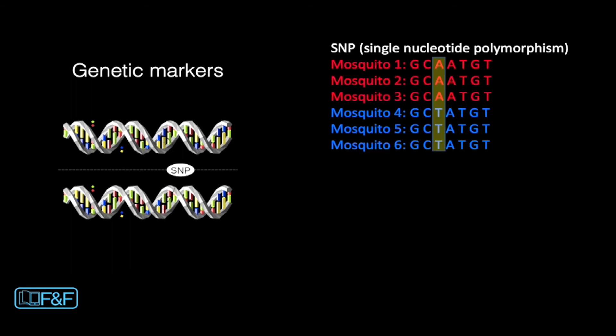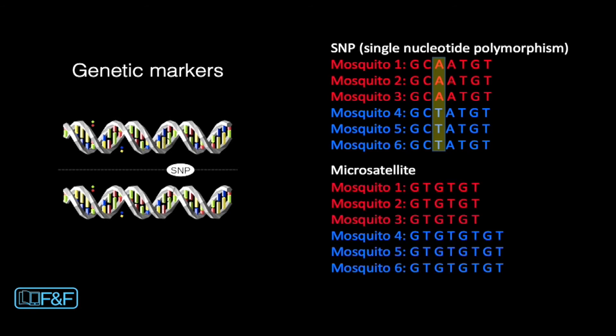Within a species, there are a lot of spots in the DNA that are the same across all individuals, but there are some spots that differ — and those are important for these analyses. One type of genetic marker is called a single nucleotide polymorphism, or SNP, and that's when individuals vary at one specific location in the genome. For example, the red population of mosquitoes generally has an A at that third position, whereas the blue population generally has a T. Another type of genetic marker we used is called a microsatellite, where different individuals have a different number of repeats of a DNA sequence. In total, we used 12 microsatellites and more than 15,000 SNPs in this analysis.